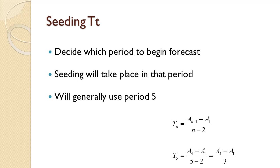Of course, if the problem tells you to use a different period, you should use that period. To seed the beginning trend value t sub b, or t5 if starting with period 5, we just average the increase or decrease in the actuals. To calculate that, we take the actual in period t minus 1, subtract the actual in period 1, and divide it all by t minus 2. When starting with period 5, that is a4 minus a1 divided by 3.